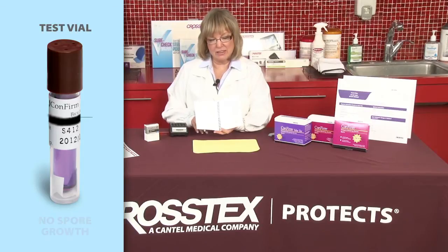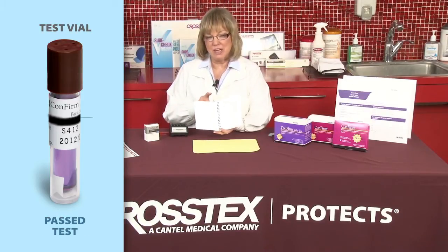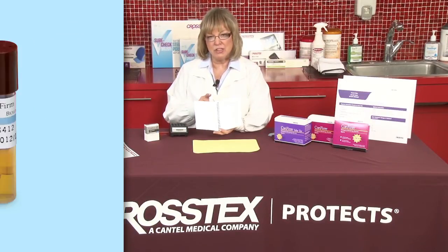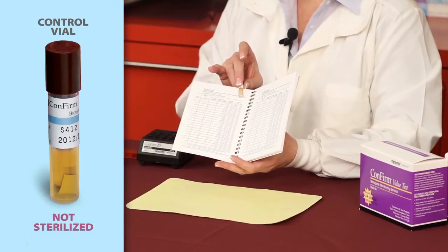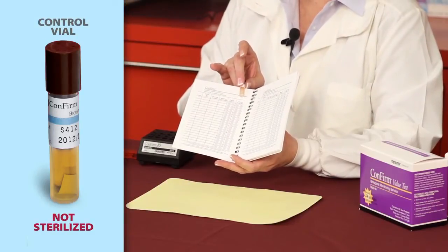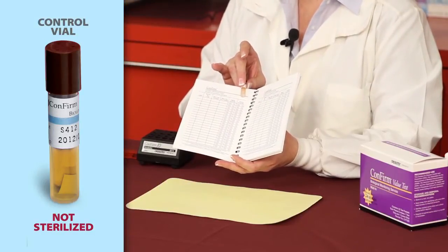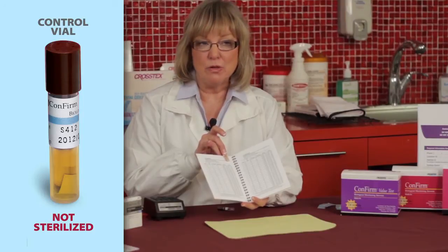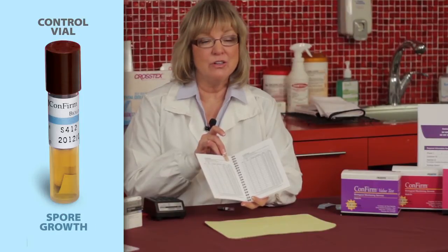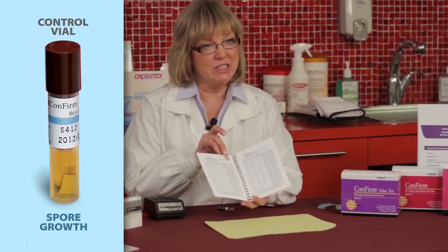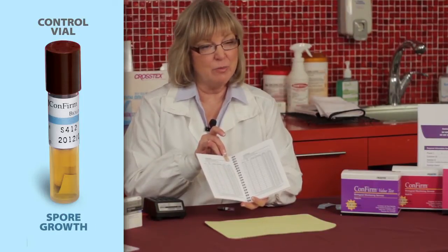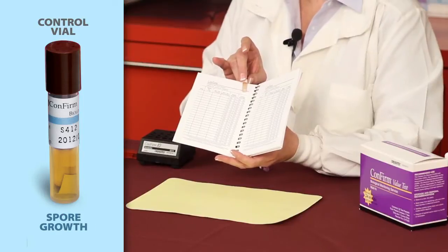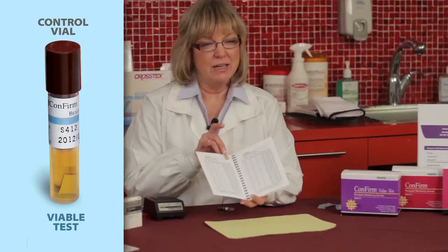We would then look at the control vial, which, remember, was not processed through the sterilizer. When it comes out of the incubator and we see that it has changed colors, that indicates that spore growth has occurred, which means the test was viable, and it means that the control, in fact, passed.